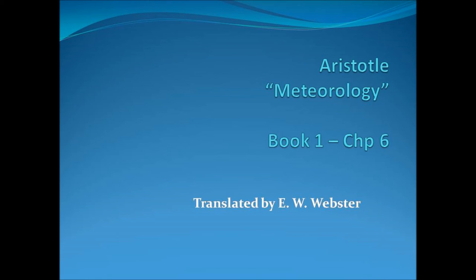Democritus, however, insists upon the truth of his view and affirms that certain stars have been seen when comets dissolve. But on his theory this ought not to occur occasionally, but always. Besides, the Egyptians affirm that conjunctions of the planets with one another and with the fixed stars take place. And we have ourselves observed Jupiter coinciding with one of the stars in the twins and hiding it, and yet no comet was formed.